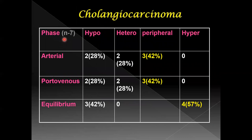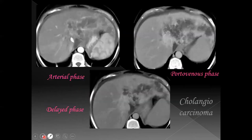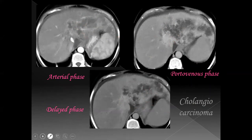Cholangiocarcinoma was seen in seven patients. The most common pattern of enhancement in the arterial phase was peripheral enhancement, seen in 42% of cases. In the portal venous phase, peripheral enhancement was again most common. In the delayed phase, the most common pattern was hyper-enhancement, meaning delayed enhancement. This case demonstrates heterogeneous peripheral enhancement in the arterial phase, heterogeneous peripheral enhancement in the portal venous phase, and hyper-enhancement of non-enhancing areas in the delayed phase, which is the typical enhancement pattern of cholangiocarcinoma.